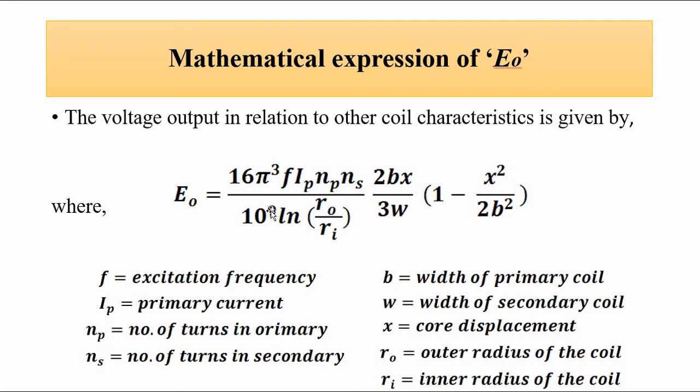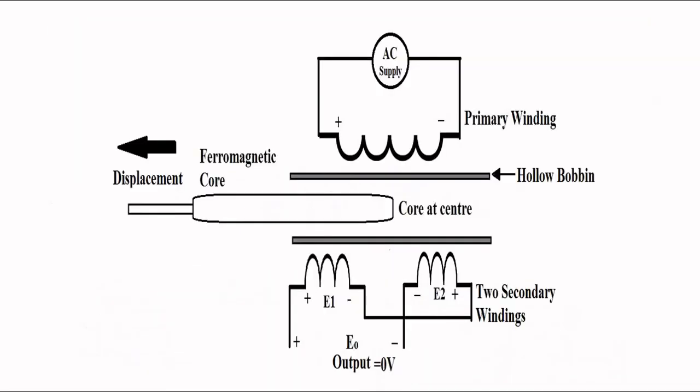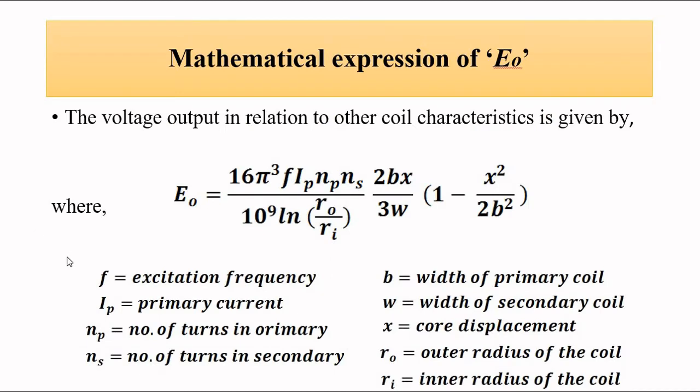Here the small f is the frequency of the AC supply, ip is the current flowing through the primary winding, np is the number of turns of the primary winding, ns is the number of turns of the secondary winding, then b is the width of the primary coil, and w is the width of the secondary coil, and x is the core displacement.